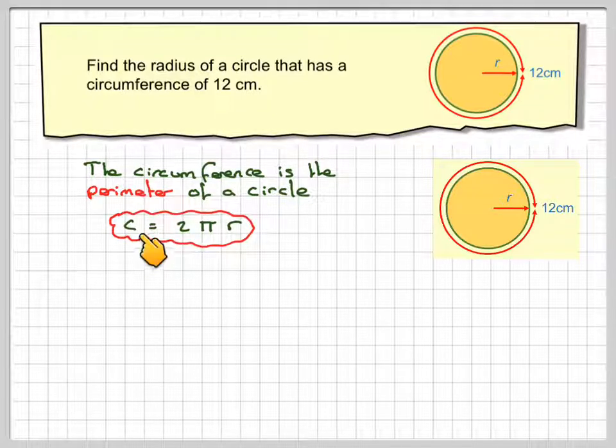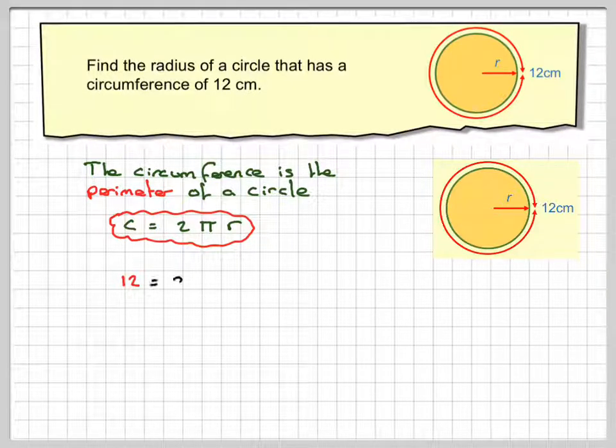We know that the circumference of a circle is equal to 2πr. So C will be 12, and that's going to be equal to 2π times r.